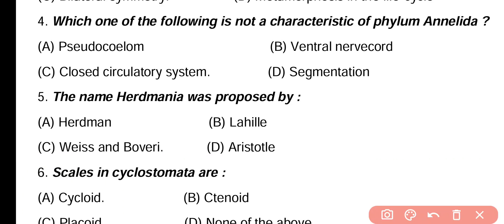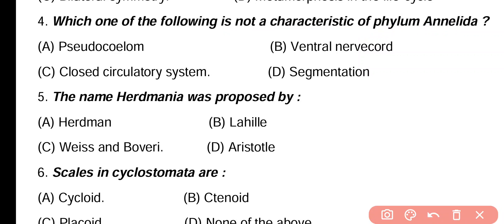Question 4. Which one of the following is not a characteristic of phylum Annelida: pseudocoelome, ventral nerve cord, closed circulatory system, segmentation? Correct answer is option A. Pseudocoelome is a characteristic of phylum Nematoda, so it is not a characteristic of phylum Annelida, while the remaining three — closed circulatory system, ventral nerve cord, and segmentation — are present in annelids.